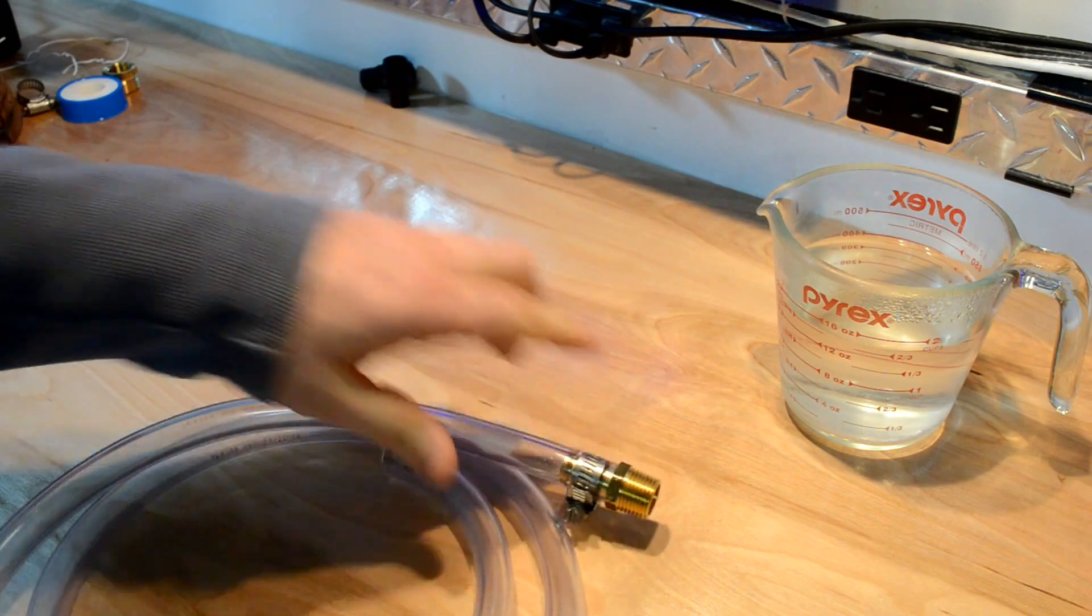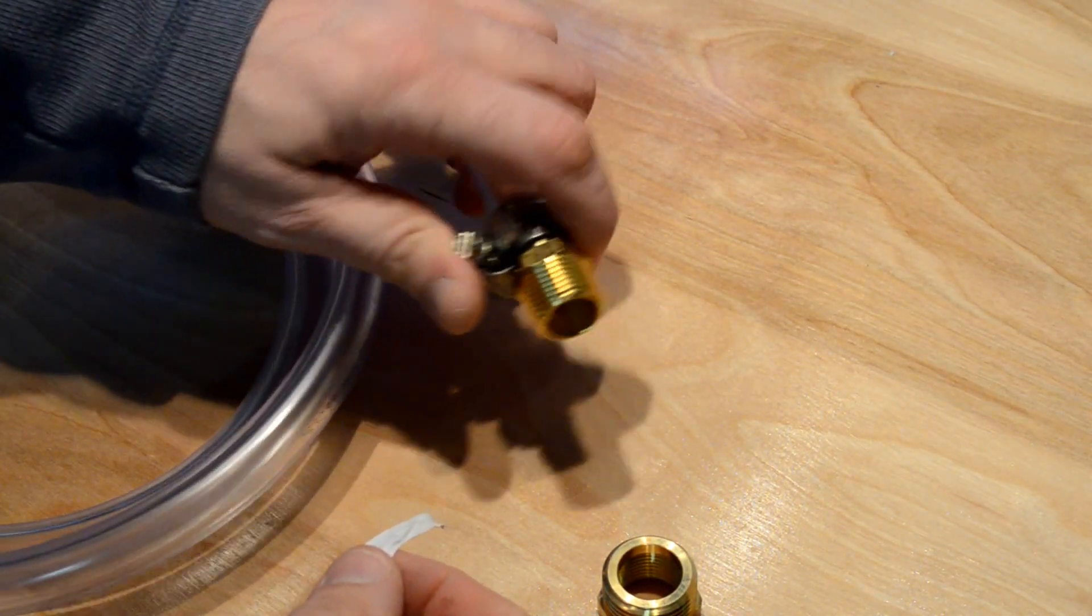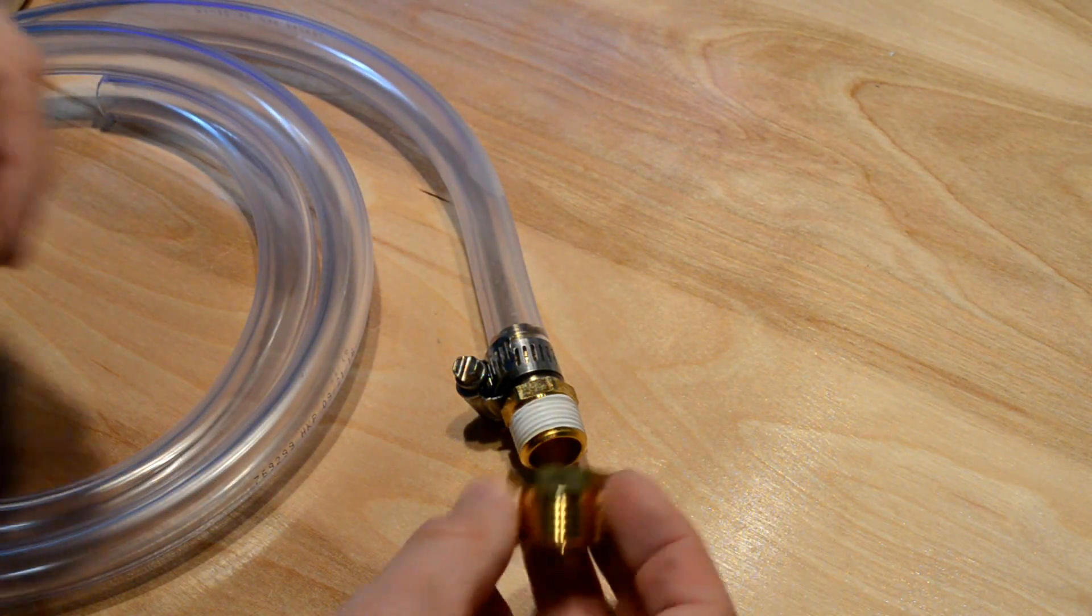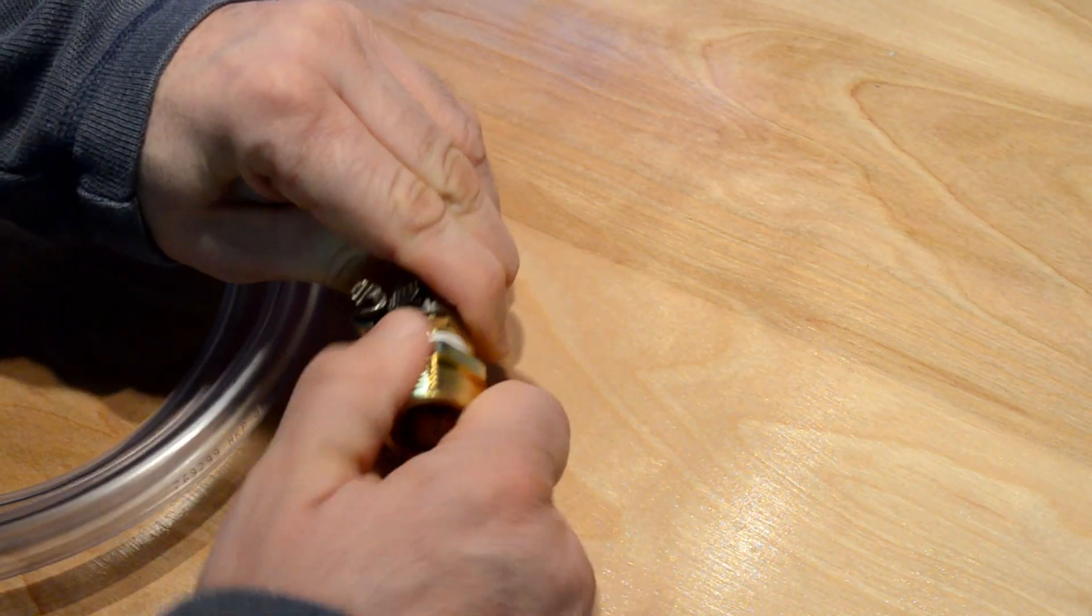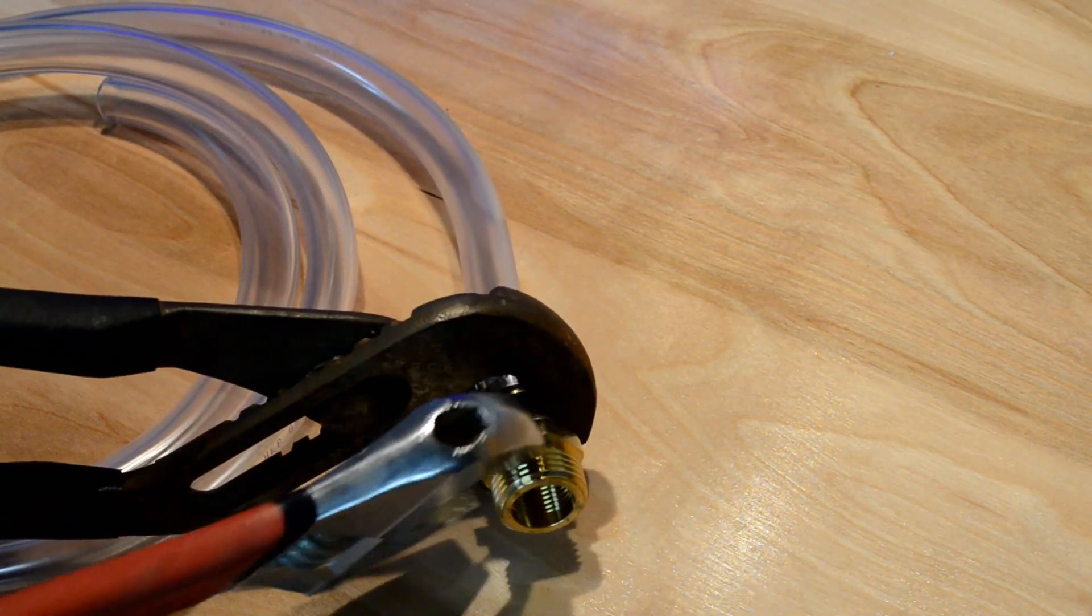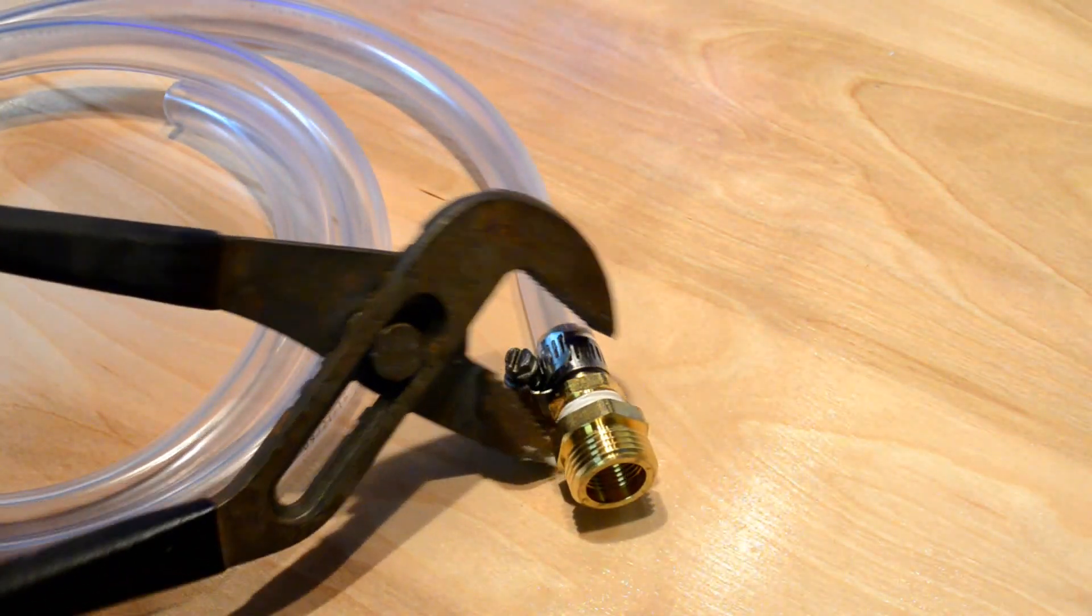Just like that. Now take some Teflon tape or some thread sealing tape here and go ahead and wrap it. Now take your garden hose adapter here and go ahead and screw it on and tighten it up. Just like that.